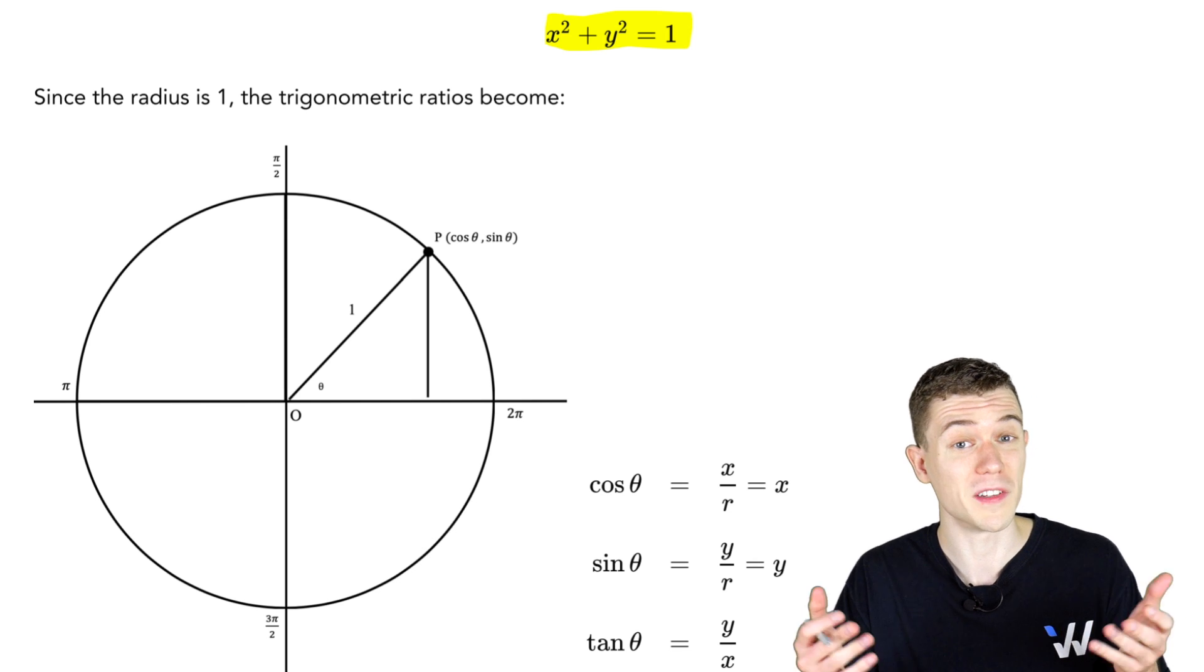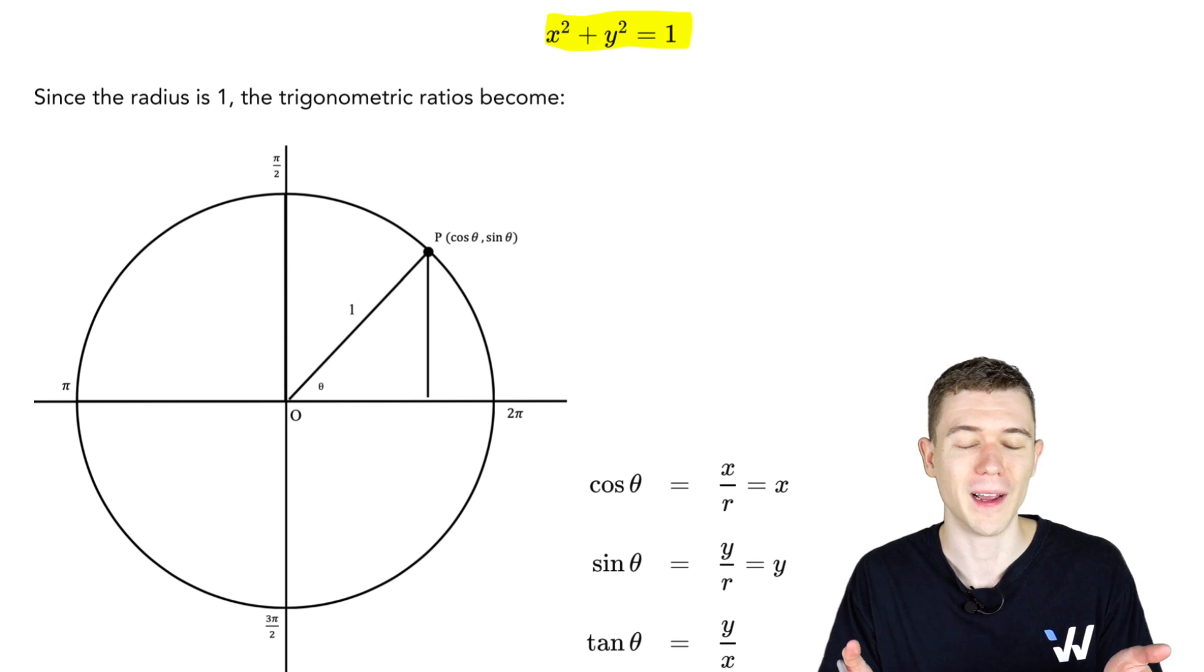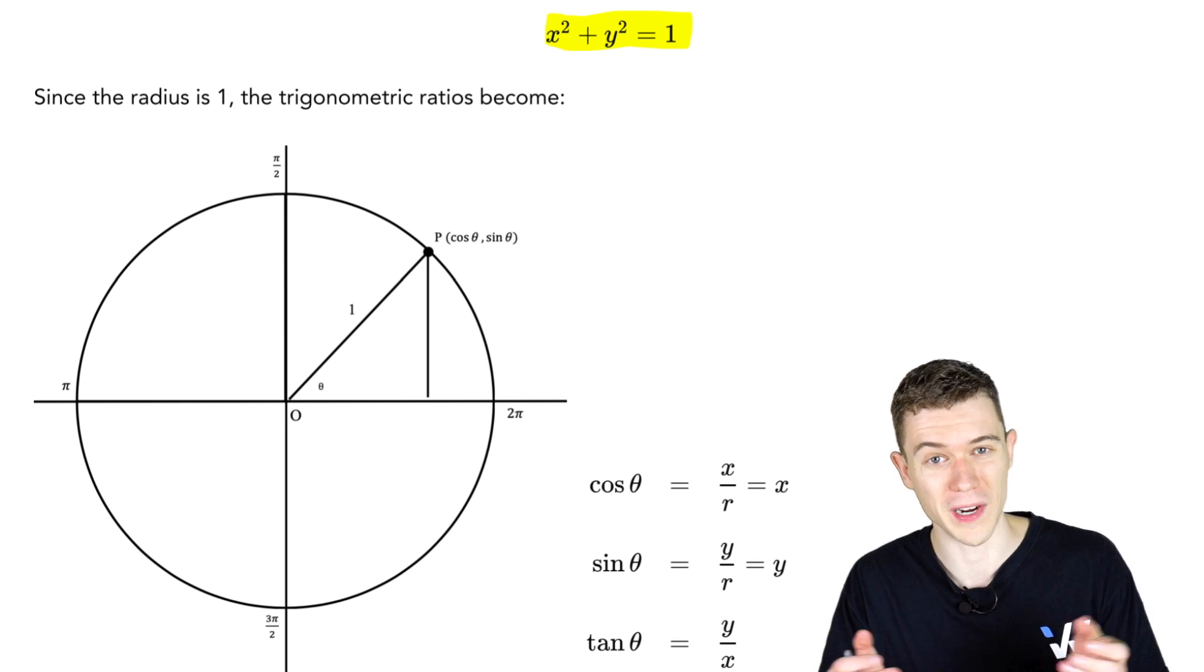That's the equation of a circle with radius 1 centered at the origin, hence the unit circle for radius 1.